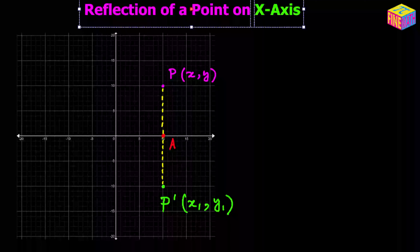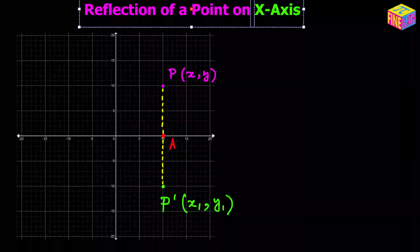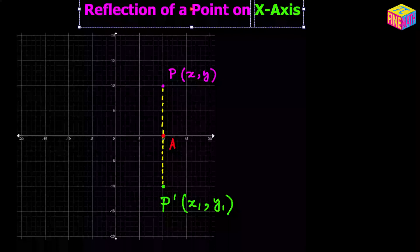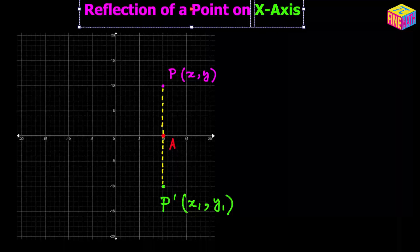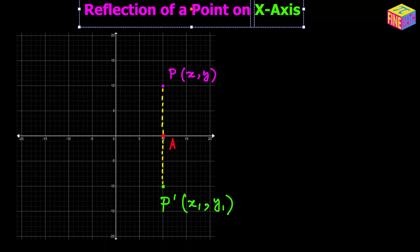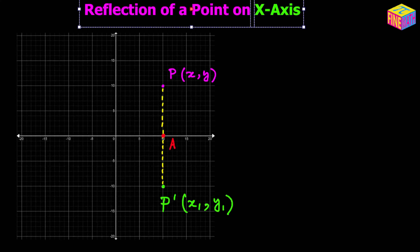In this video we are going to discuss the reflection of a point on the x-axis. Suppose we have a point P located in the first quadrant, and the coordinates of point P are (x, y). The task is to find the coordinates of its reflection. Let's assume the reflected point is P prime with coordinates (x₁, y₁), so we have to find the values of x₁ and y₁.